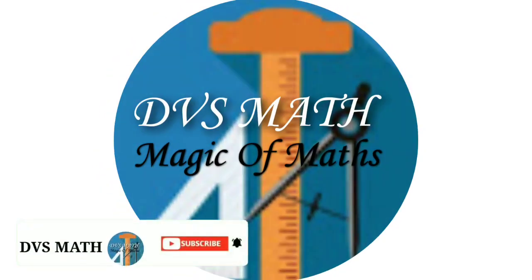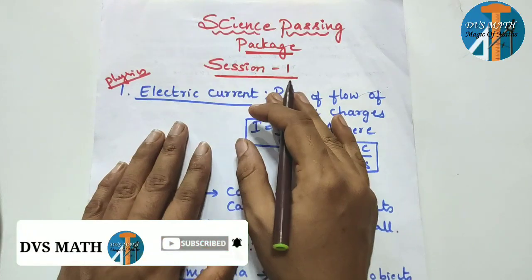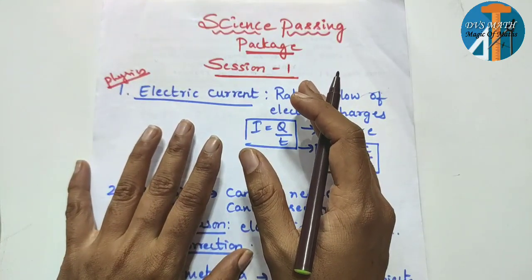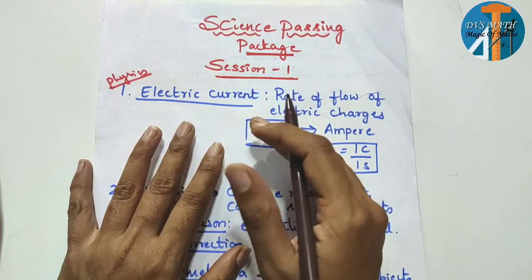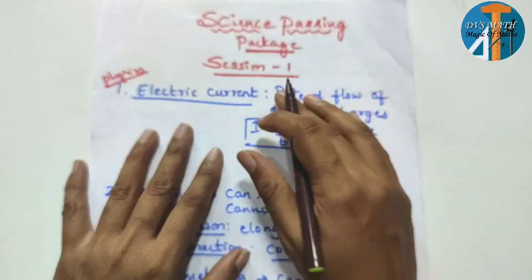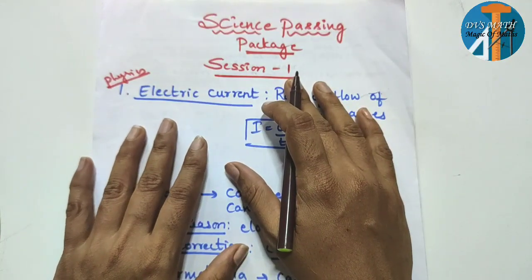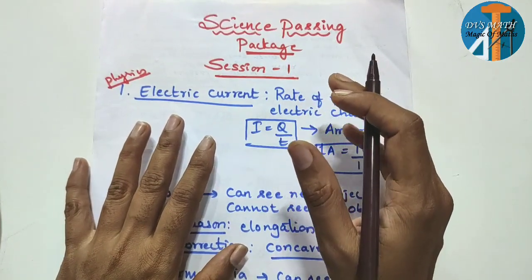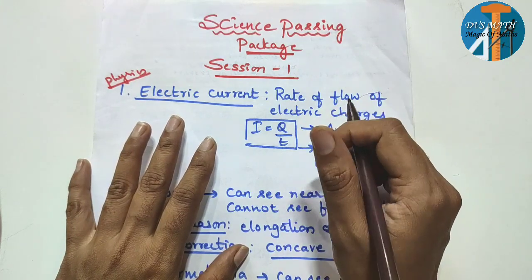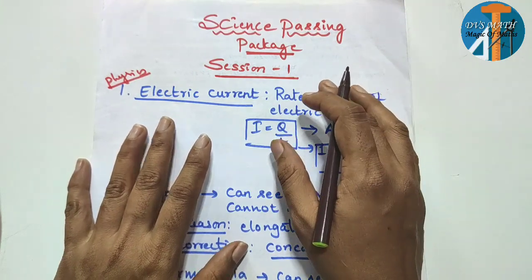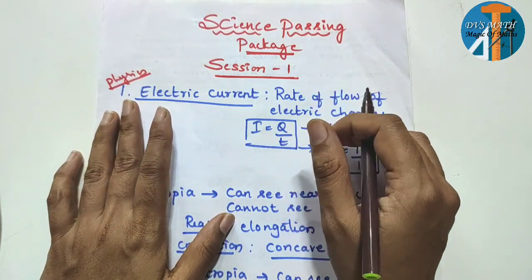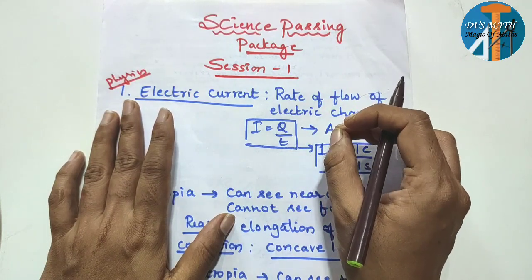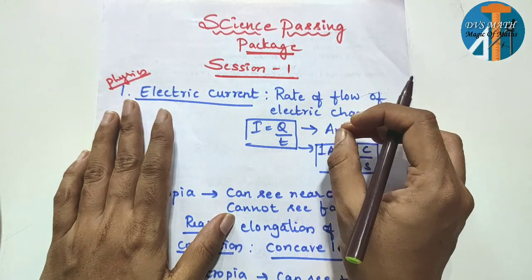Hi everyone, welcome to DVS Math. So in this session I have 15 questions — all three branches: physics, chemistry, and biology — all three are 15 questions with easy answers. I have a note and I have to practice the answers.